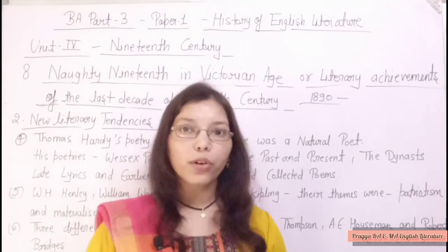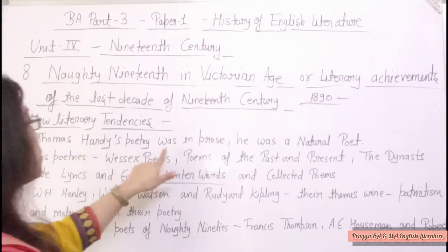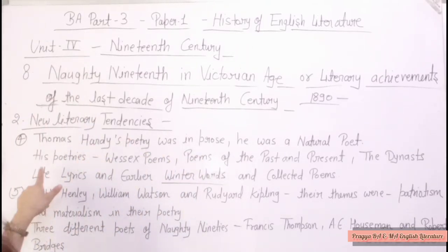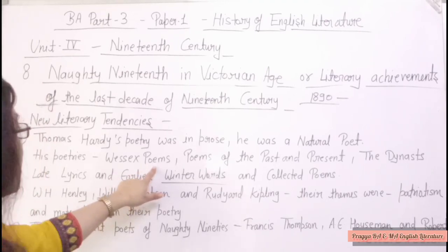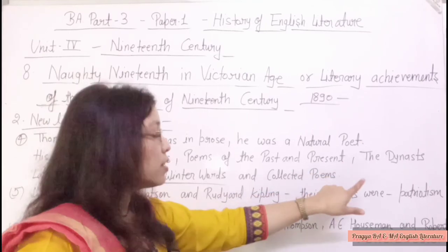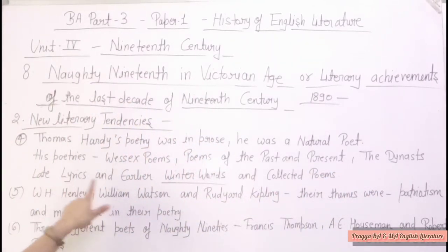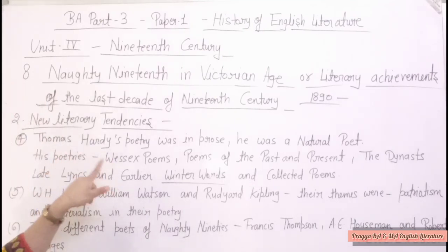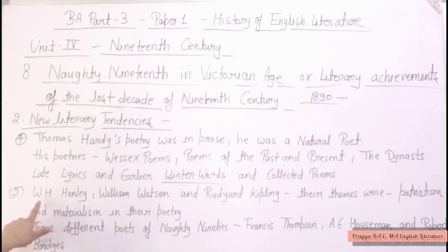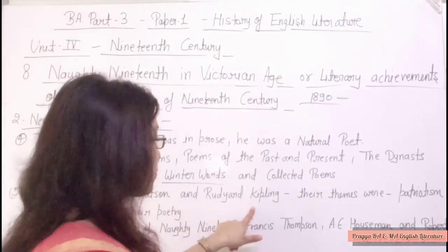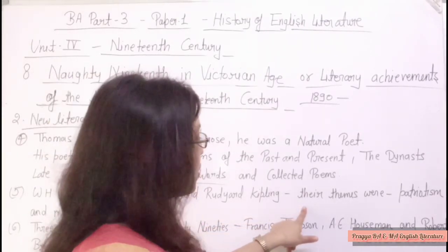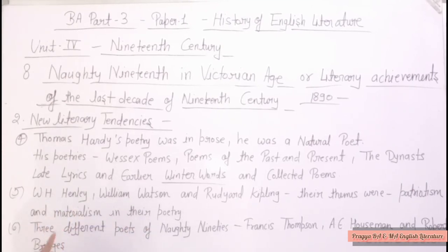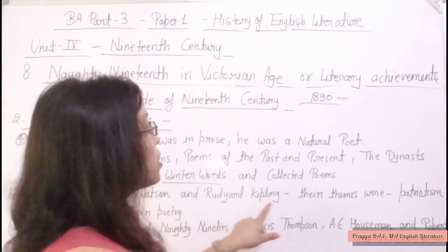Continuing with new literary tendencies: Thomas Hardy's poetry was in prose — he was a natural poet. His poetry collections include Poems of the Past and Present, The Dynast, Late Lyrics and Earlier, and Winter Words. Other poets of the era — W.H. Henley, William Watson, and Rudyard Kipling — had themes of patriotism and materialism in their poetry, especially Rudyard Kipling.